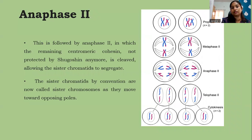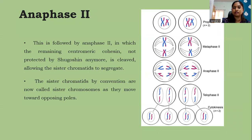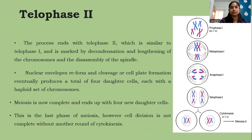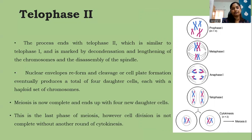In anaphase two, the remaining centromeric cohesin — no longer protected by shugoshin — is cleaved, allowing sister chromatids to segregate. The sister chromatids, now called sister chromosomes by convention, move towards opposing poles. Telophase two is very similar to telophase one and is marked by decondensation and lengthening of chromosomes and disassembly of the spindles. The nuclear envelope reforms and cleavage or cell plate formation produces a total of four daughter cells each with a haploid set of chromosomes. Meiosis is now complete; however, cell division is never complete without a final round of cytokinesis.